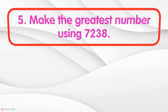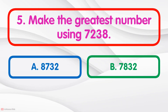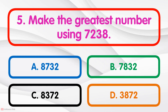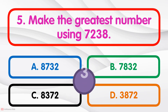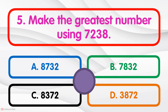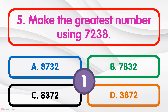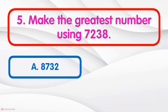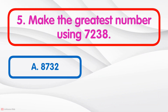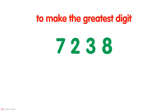Make the greatest number using the digits 7, 2, 3, and 8. Option A: 8732. 8732 is the greatest number. To make the greatest number, simply arrange these digits in descending order.